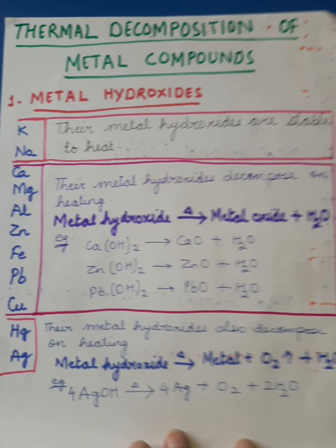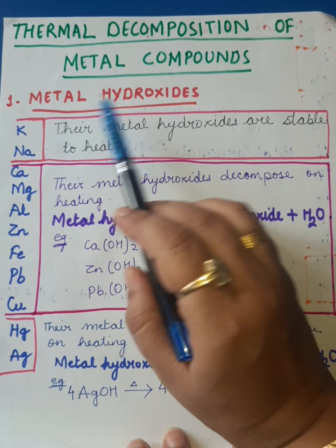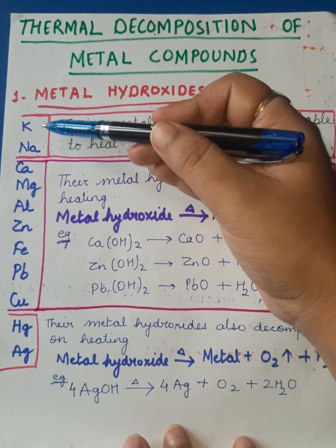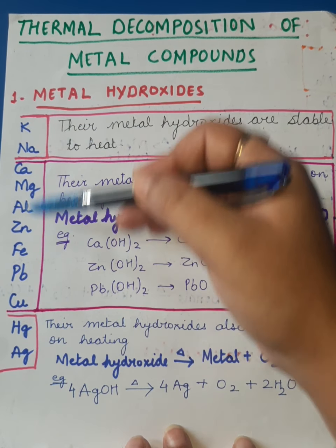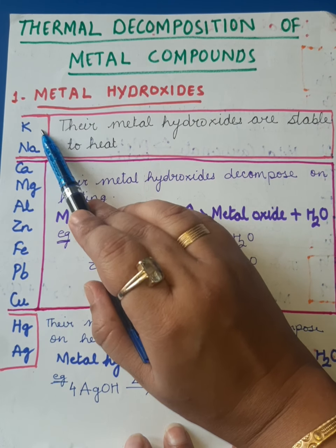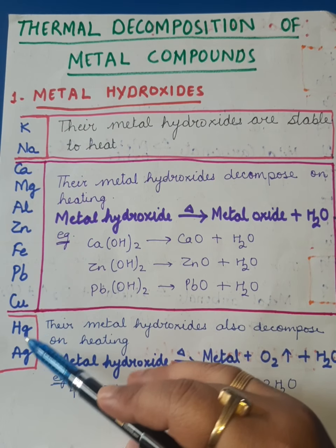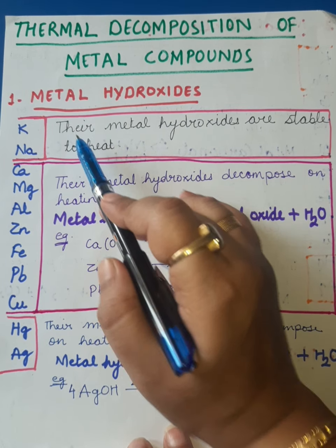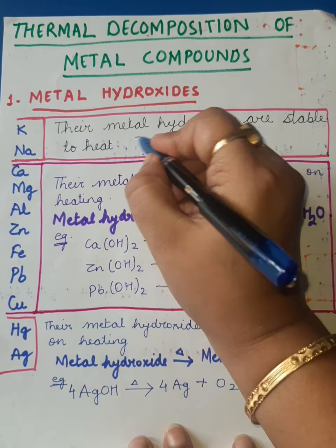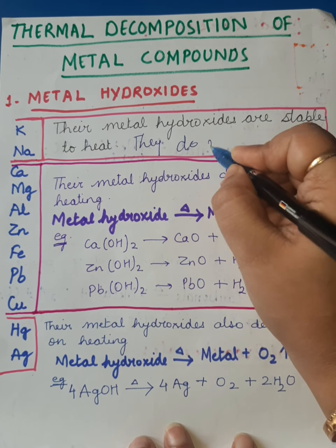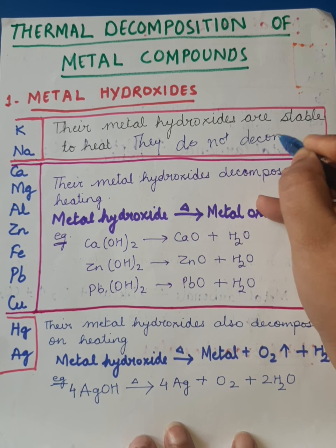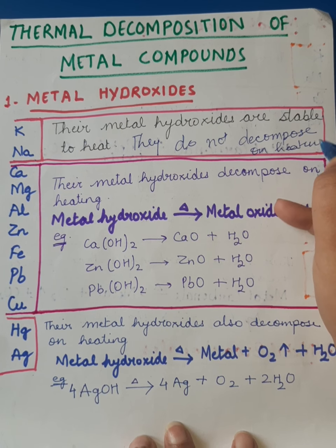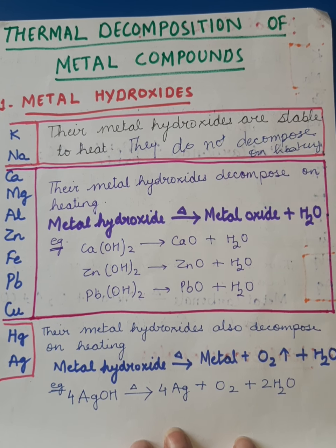Now I will start with metal hydroxides first. Looking at the activity series divided into three categories: first category is potassium and sodium. Their metal hydroxides are stable to heat — that means they do not decompose on heating. So no need to learn any chemical equation for these two metals.